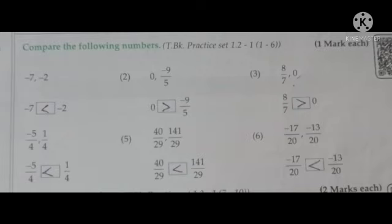(3) 8/7 and 0. Now 8/7 is greater than 0. (4) -5/4 and 1/4. A positive number is always greater than a negative number, so -5/4 is less than 1/4.